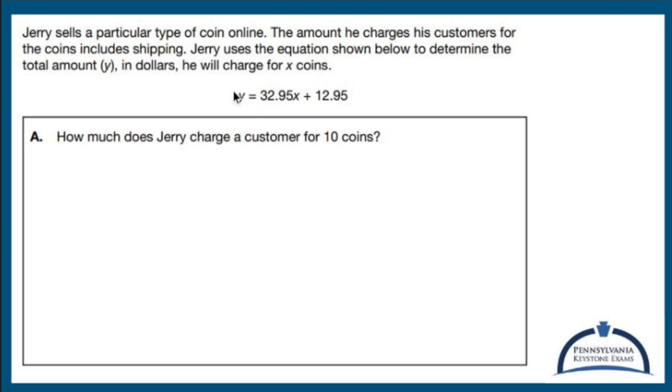What you would do is Y is your total cost, says it right there, and X is your coin. So if we're showing all of our steps, even though it doesn't tell me to, I'm going to do it anyway.